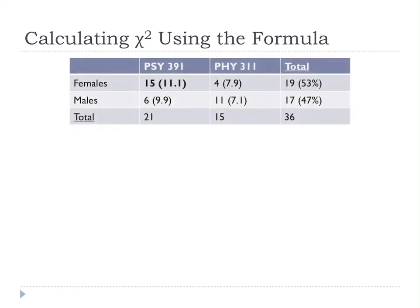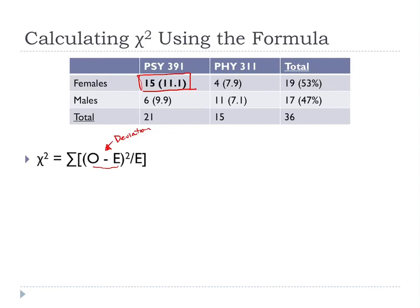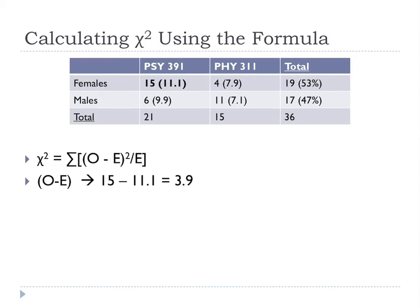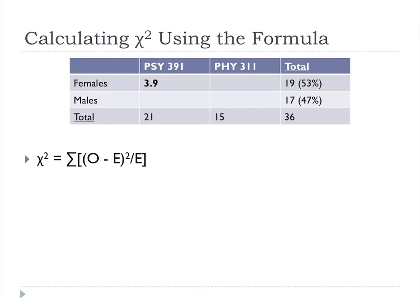Remembering our order of operations from fifth grade, we start with the innermost brackets — O minus E, also called our deviation. We start with the deviation: observation minus expectation for a single cell. For the first cell, that's 15 minus 11.1, which equals 3.9. So our deviation, O minus E, equals 3.9.